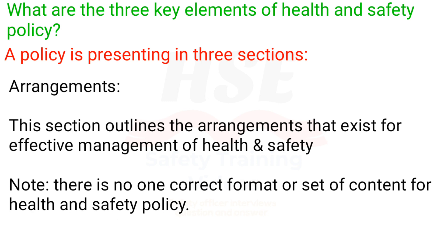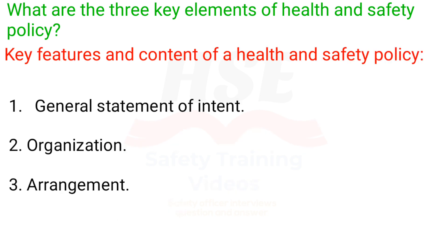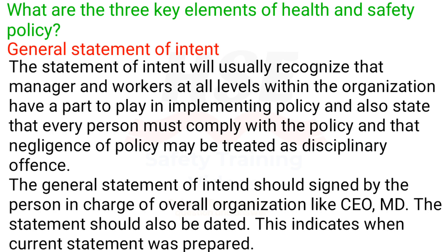There is no one correct format or set of content for a health and safety policy. Key features and content include: 1. General statement of intent. 2. Organization. 3. Arrangements. The statement of intent will usually recognize that managers and workers at all levels have a part to play in implementing policy, and state that every person must comply with the policy and that negligence of policy may be treated as a disciplinary offense. The general statement of intent should be signed by the person in charge of overall organization, such as CEO or MD, and should also be dated to indicate when the current statement was prepared.